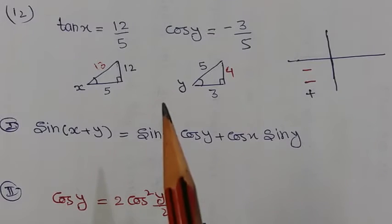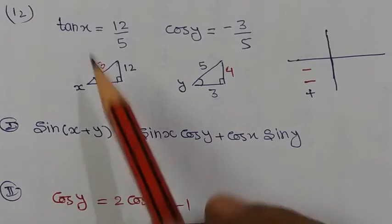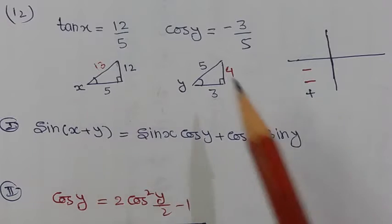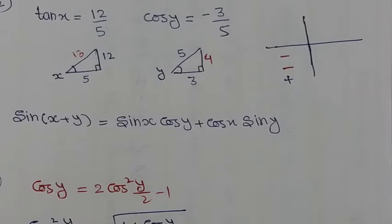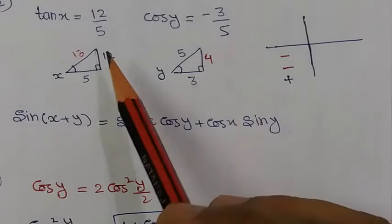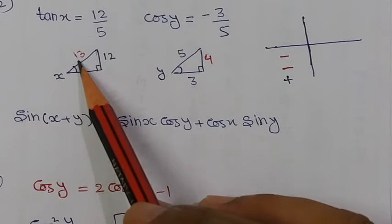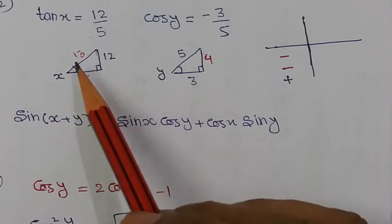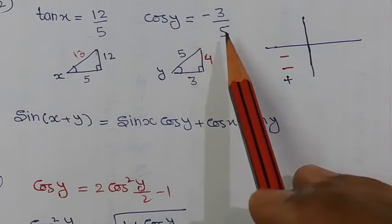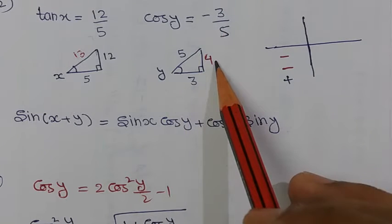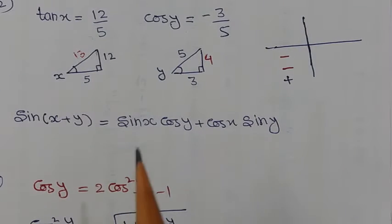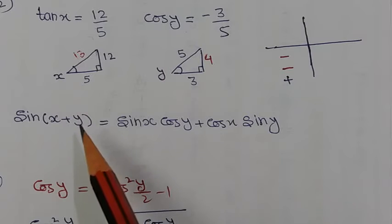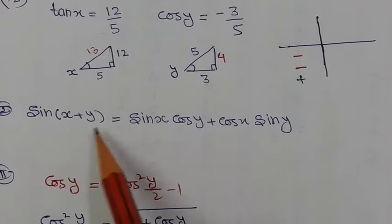We make a separate triangle for x and a separate triangle for y. In the first triangle, tan x equals perpendicular upon base, so by Pythagoras theorem we get the hypotenuse as 13. For cos y, base upon hypotenuse means 3 upon 5, so by Pythagoras theorem we get the perpendicular as 4. We complete both triangles using Pythagoras theorem, then find the value of sin(x+y).